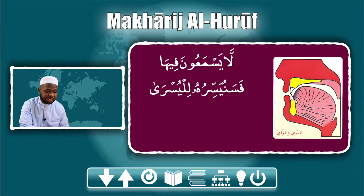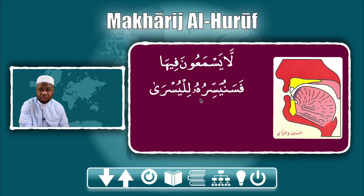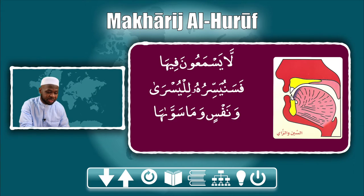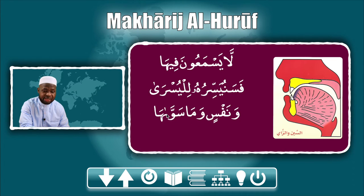Fasanuyassiruhu lil yusra — we have three different sins here, with one of them emphasized or stressed. Fasanuyassiruhu lil yusra. The next will be: wa nafsiyun wa ma sawwaha, wa nafsiyun wa ma sawwaha — you have two sins here.